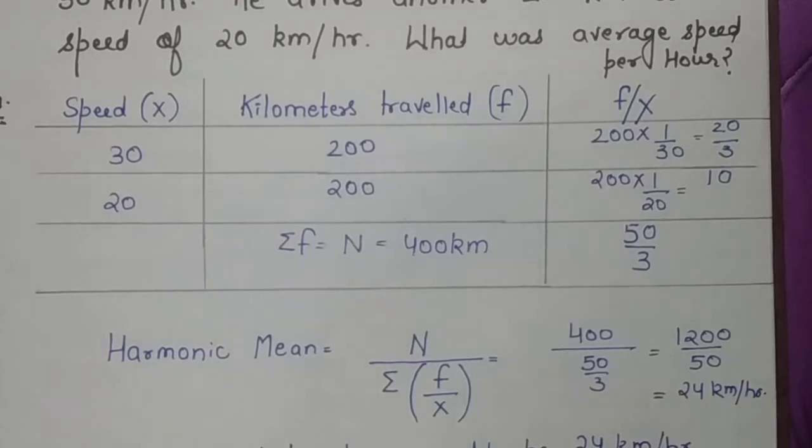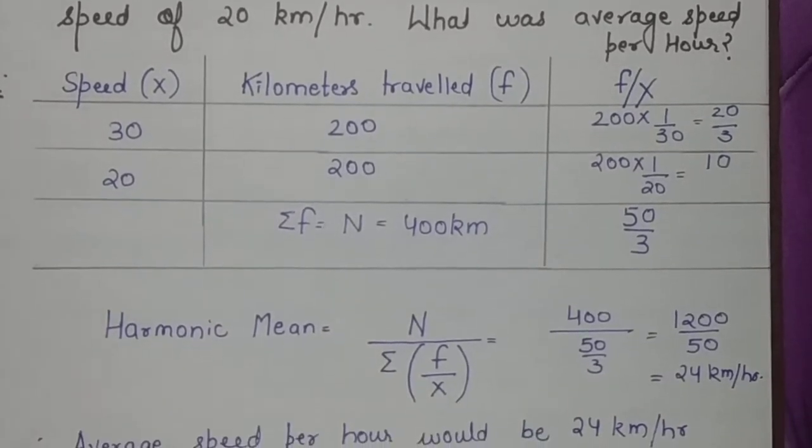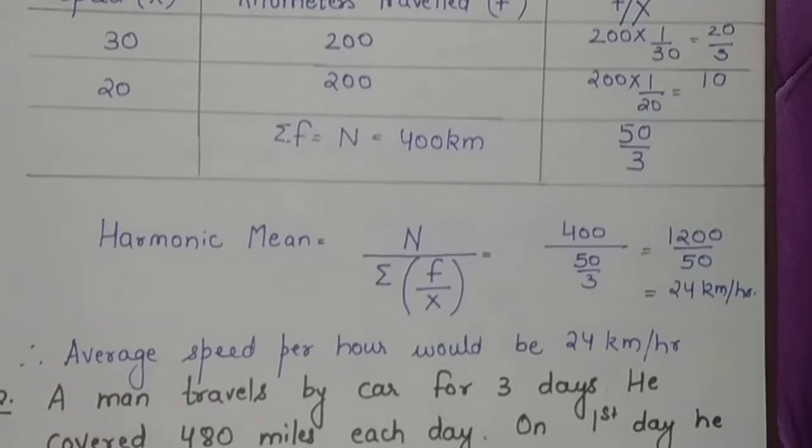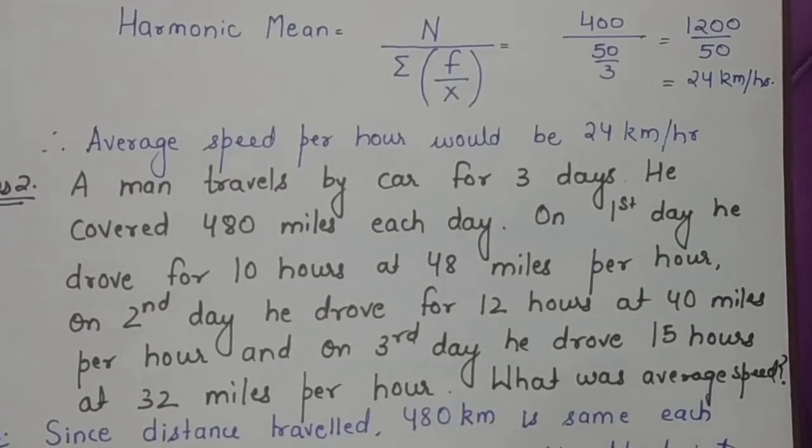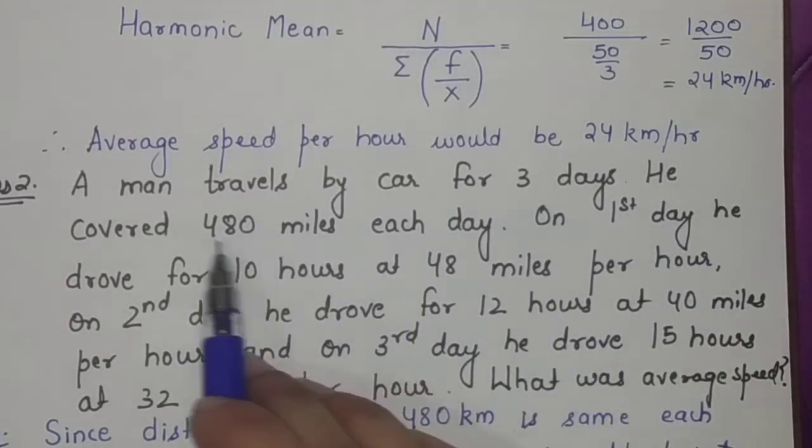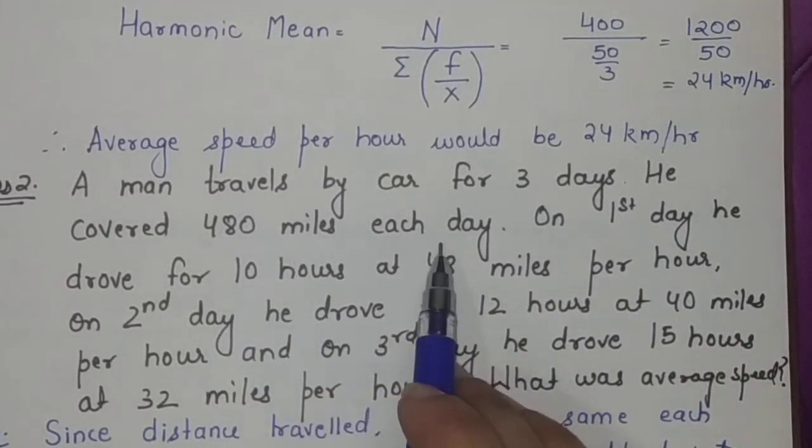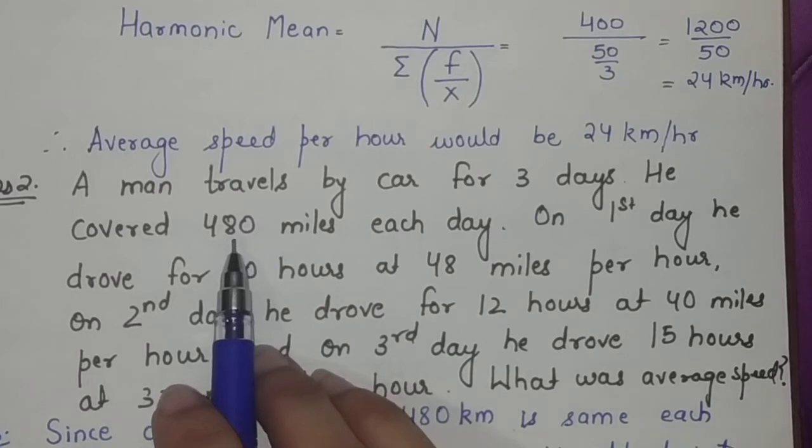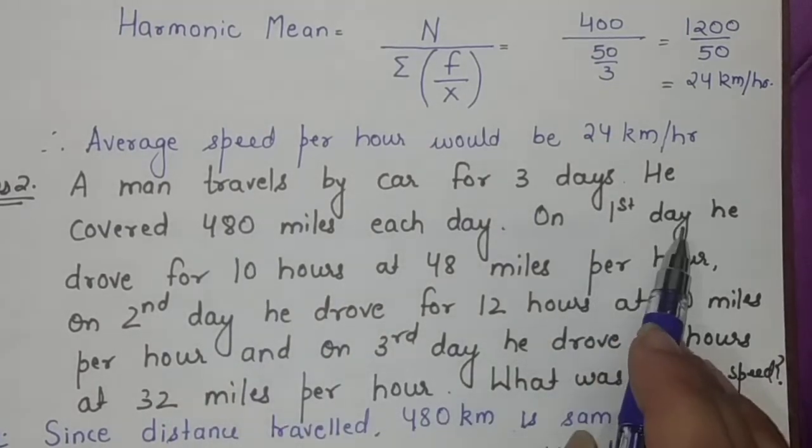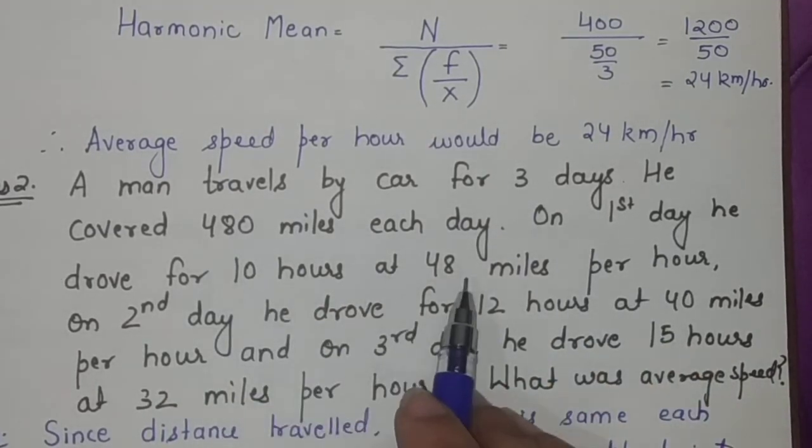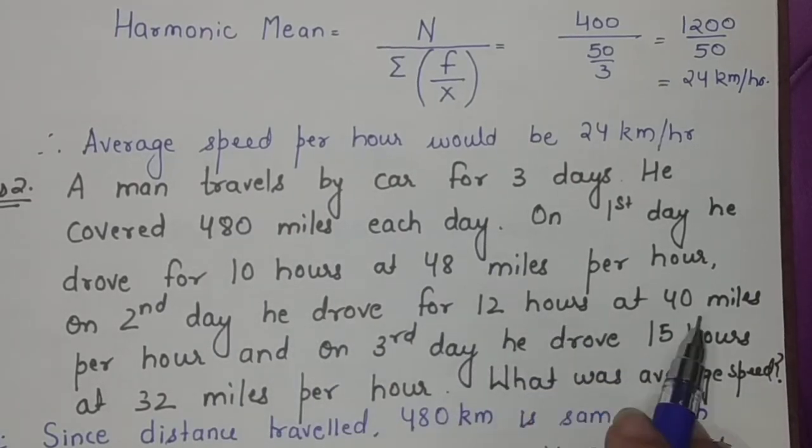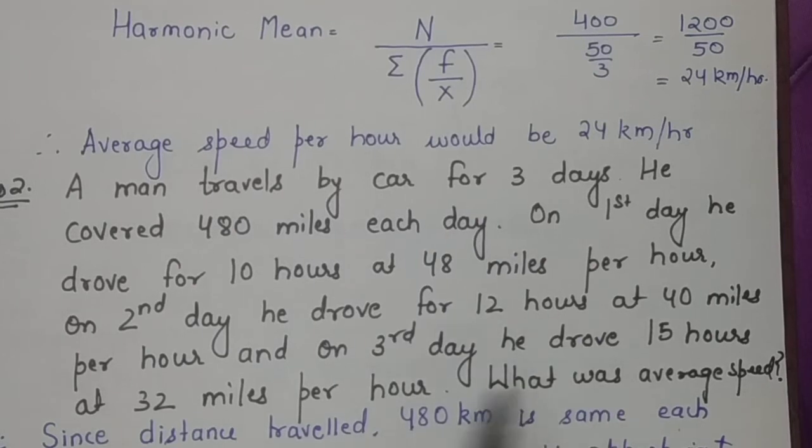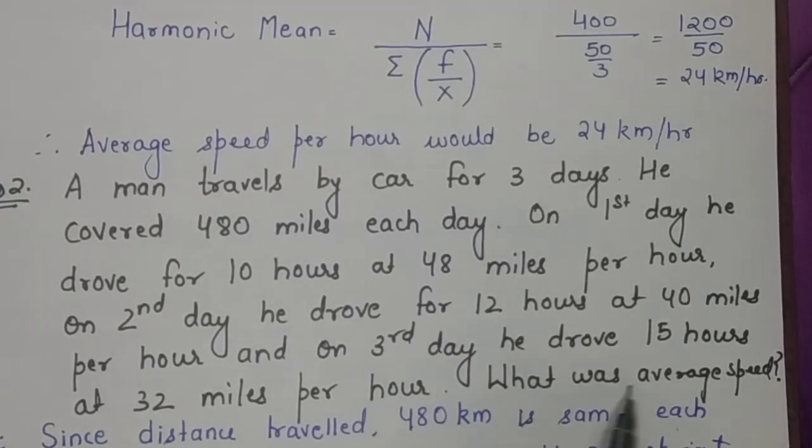Second question: A man travels by car for three days. He covered 480 miles each day. On the first day he drove for 10 hours at 48 miles per hour, on the second day he drove for 12 hours at 40 miles per hour, and on the third day he drove for 15 hours at 32 miles per hour. What was his average speed?